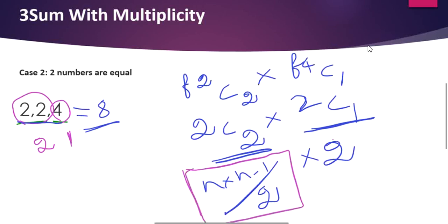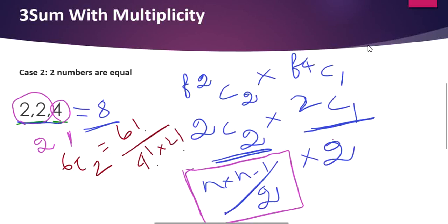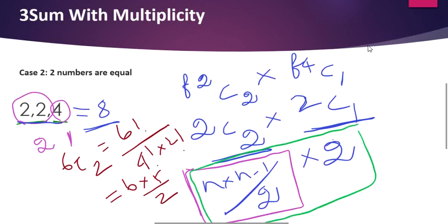So if two numbers are equal and one number is different, we apply the formula n × (n−1) / 2 times the frequency of the third number to calculate the number of valid tuples.